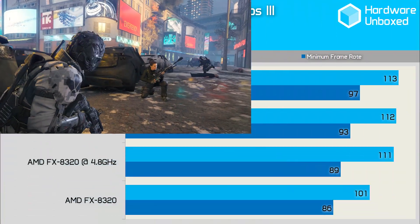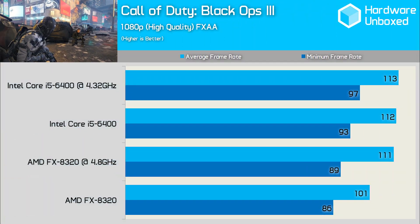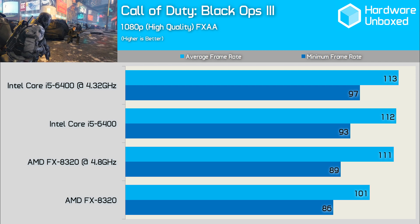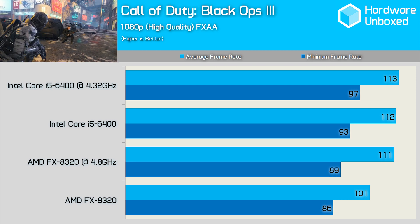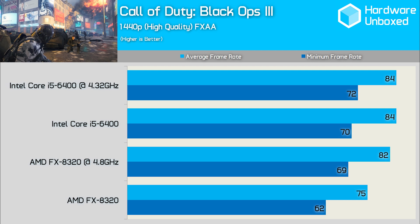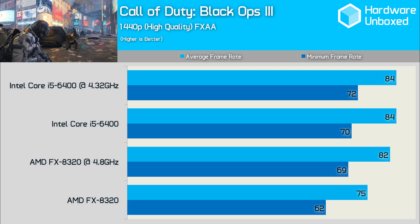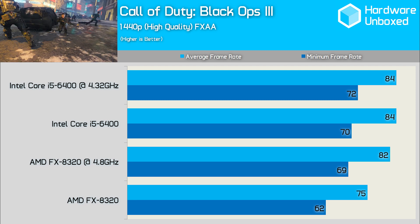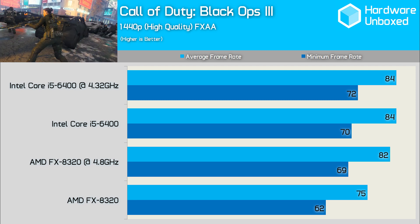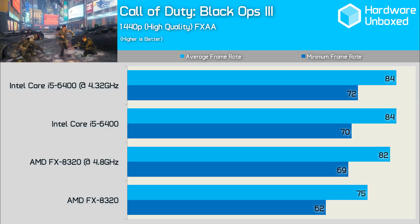Like Battlefield 4, the single player portion of Black Ops 3 isn't particularly demanding, and we see that the FX8320 is able to deliver similar performance to the Core i5-6400. Increasing the resolution to 1440p doesn't really change the performance margins, and we see that once overclocked, the FX8320 is able to get the most from the Radeon R9 390 in this title.